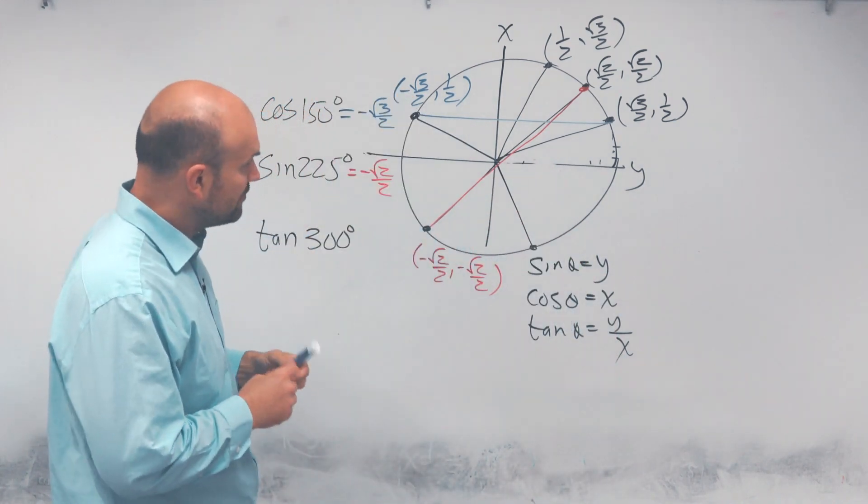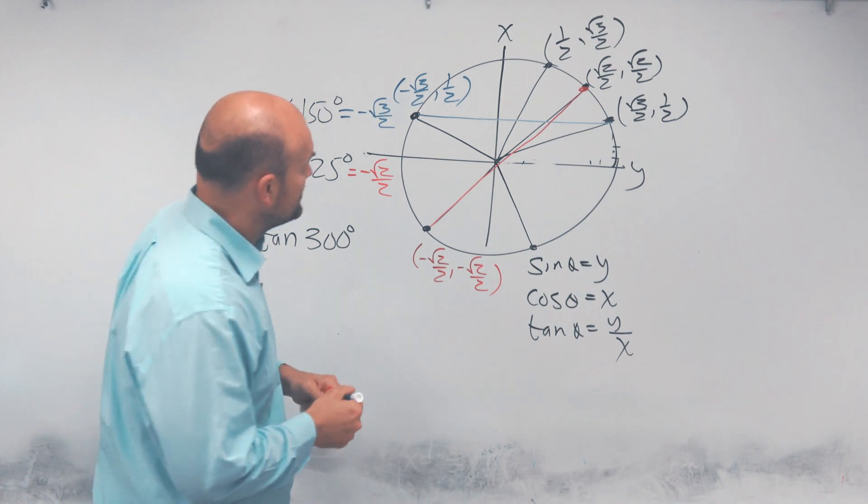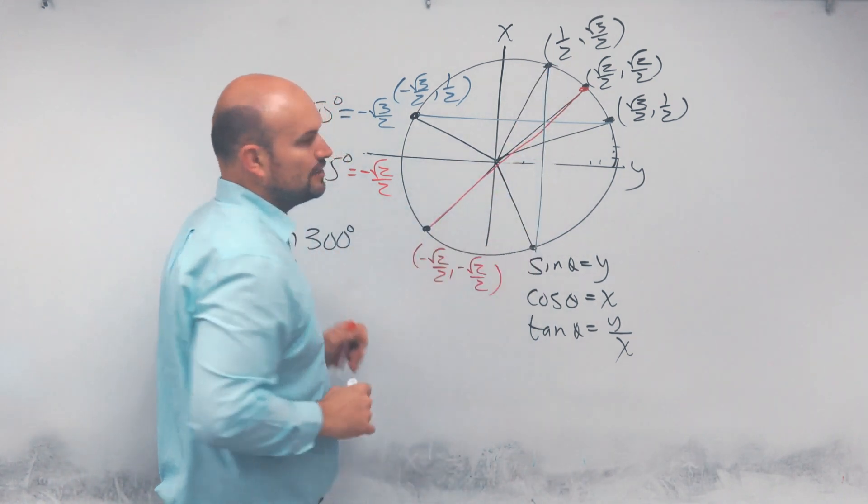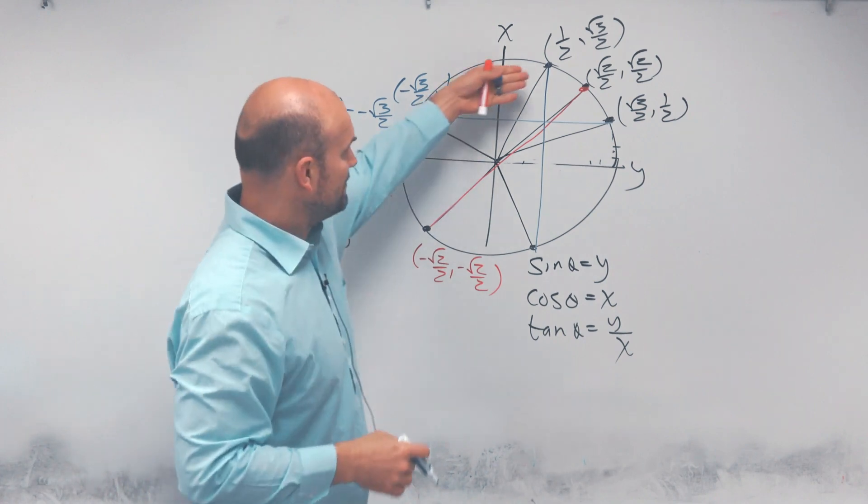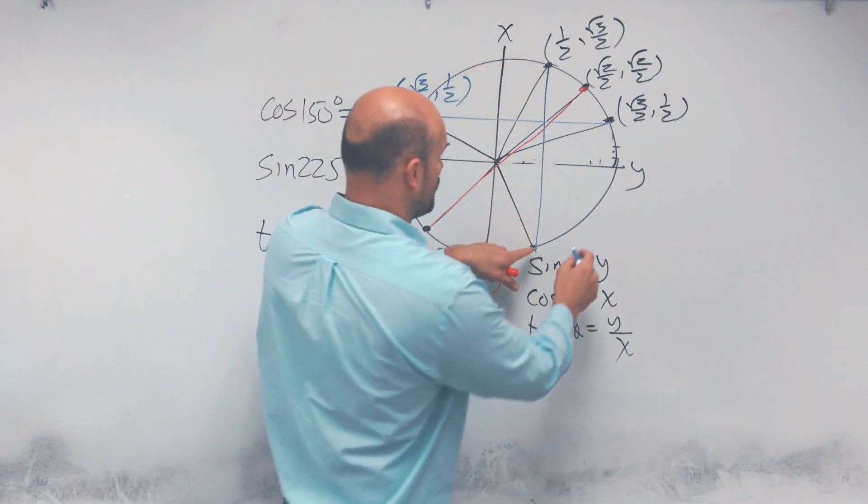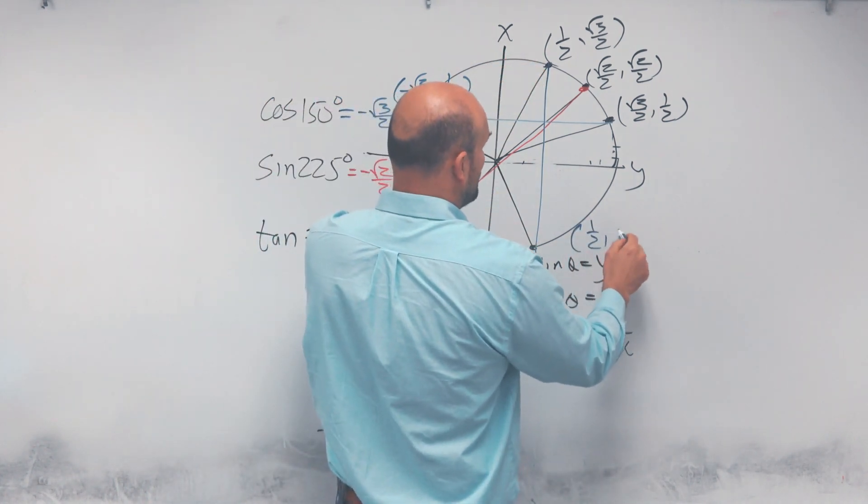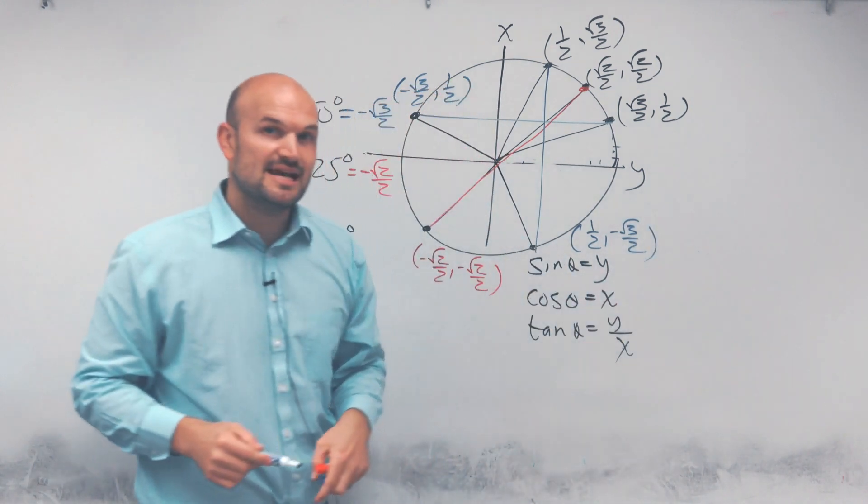Now let's go and look at the last one here, which is going to be the tangent. Again, you can see this tangent here is a reflection directly across from the x-axis. So therefore the only thing that's going to change is my coordinate point will be the same, but all I'm going to do is just reflect across the x-axis.